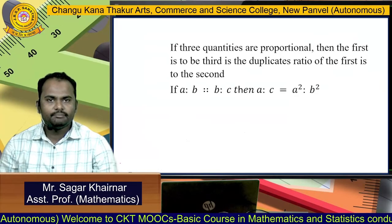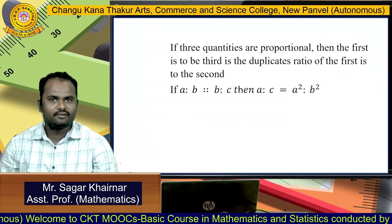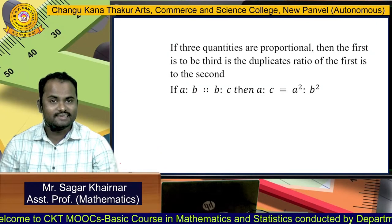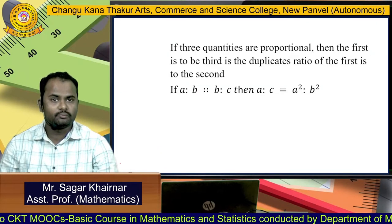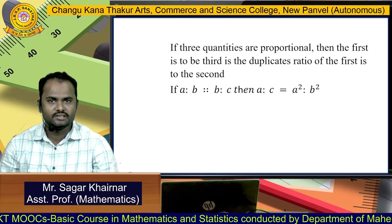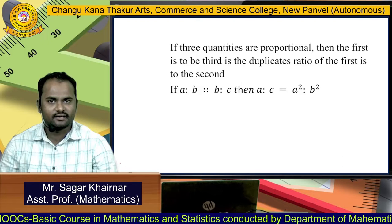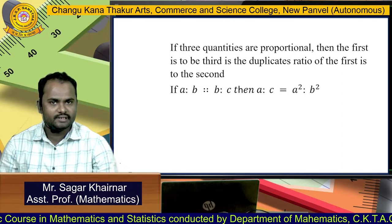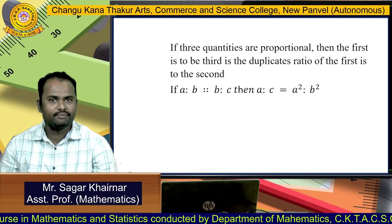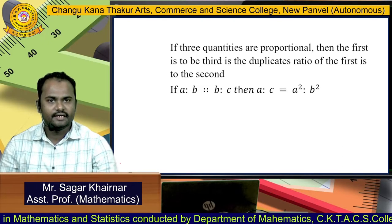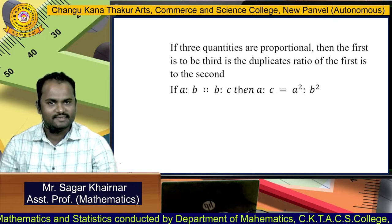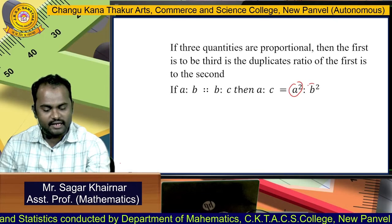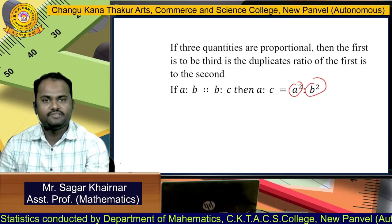If three quantities are in proportion, then the first is to the third in the duplicate ratio of the first to the second. That means if A:B = B:C, then A:C = A²:B².